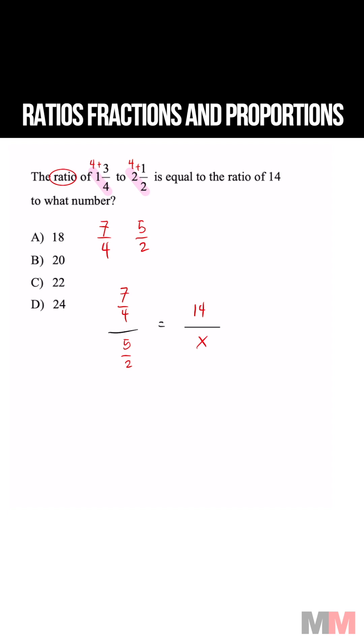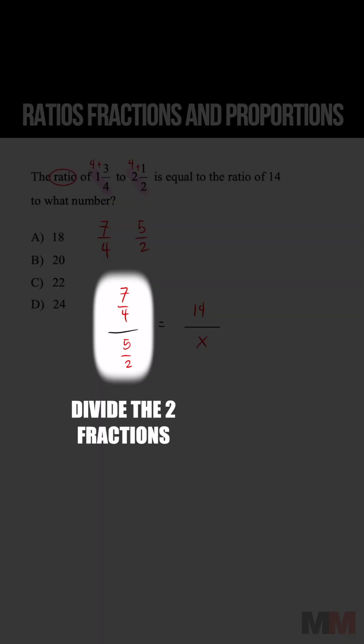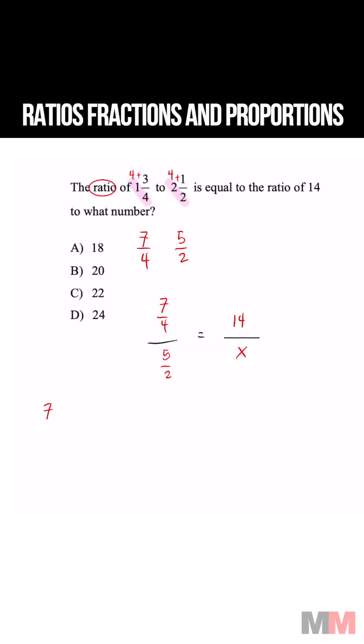We don't know what that number is, so we're going to leave that as x. To divide two fractions, all we got to do is take the first fraction and multiply it to the reciprocal of the second fraction. That's going to equal 14 over 20 equals 14 over x.